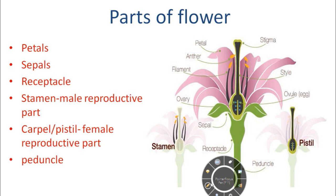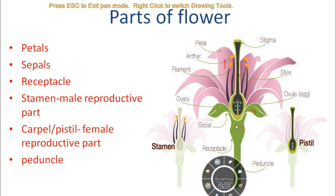As we can see in the diagram, this attractive pink portion of the flower is known as the petal. This leaf-like structure is known as the sepals. This is the receptacle and this is the peduncle, which is a stalk-like structure on which the flower is borne. This is the stamen, which is the male reproductive part. It has anther and filament. The anther is the one which carries the pollen grain, which is the male gamete.